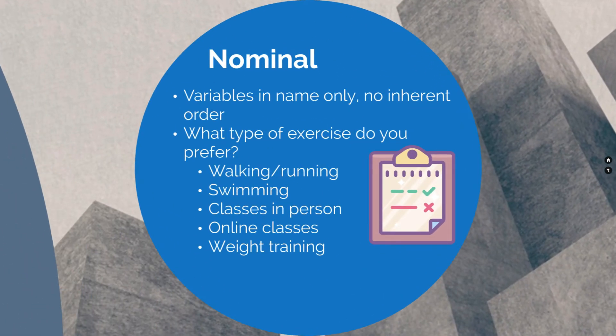Nominal variables have no inherent order. So if the question is 'What type of exercise do you prefer?' — this is simply a preference answered by a participant in a research study. They could select one or multiple options, and there is no inherent order. These same responses could become ordinal if the question were 'What is the highest number of calories burned by these exercises?' — but in this instance it is simply a nominal response.